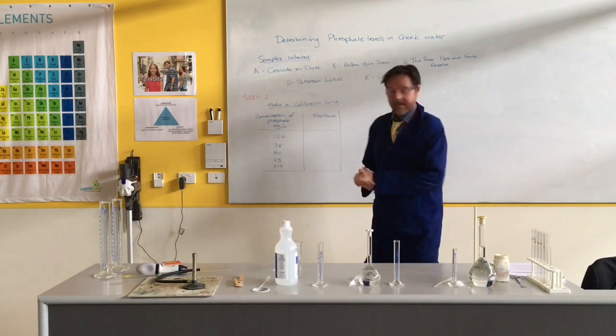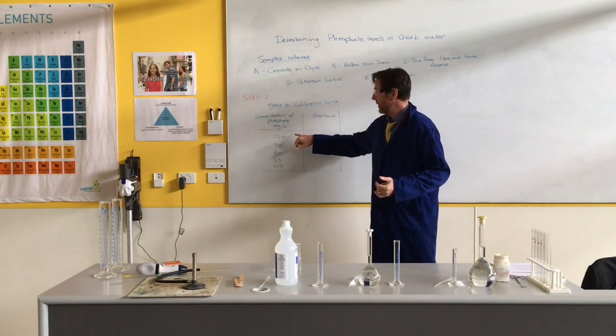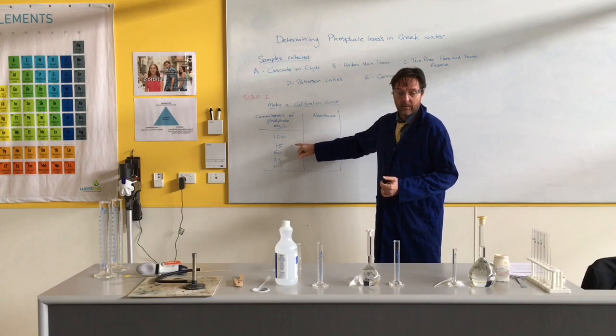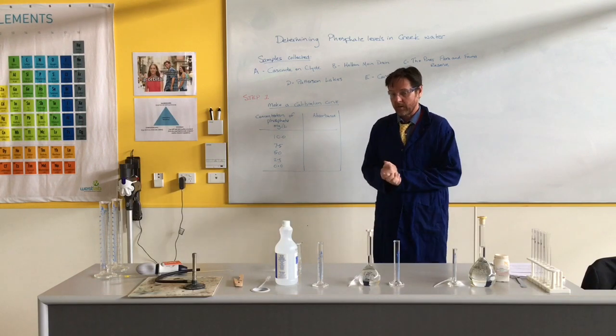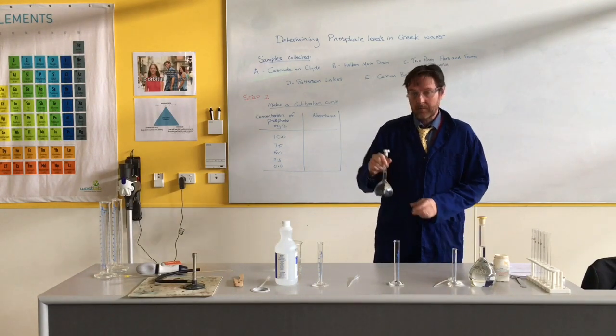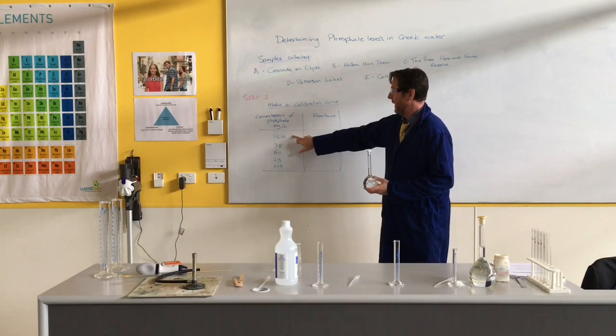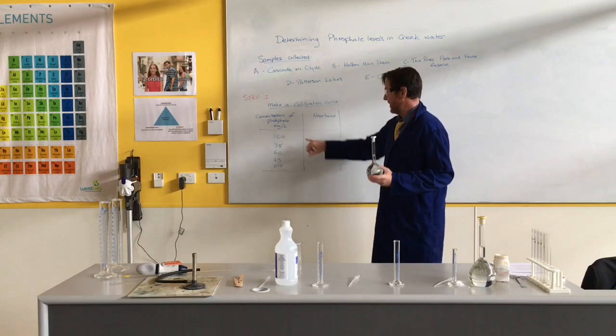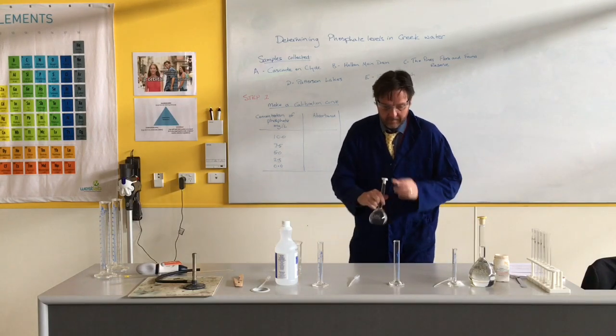Okay, so the first step we're going to do now is make up the different concentrations of phosphate. The phosphate that we know the concentration of, we made this not long ago. So this is 10 milligrams per litre. The first one that we're going to make is going to be purely just this stuff, so we're going to get 10 milligrams per litre.